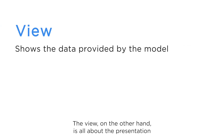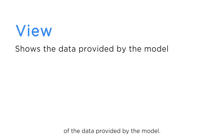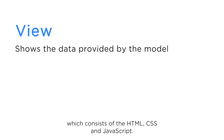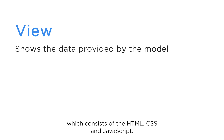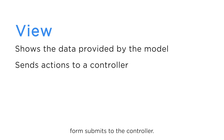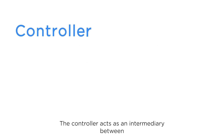The view, on the other hand, is all about the presentation of the data provided by the model. It is the user interface of the application, which consists of the HTML, CSS, and JavaScript. The view displays the data from the model to the user and also sends user actions like button clicks and form submits to the controller.